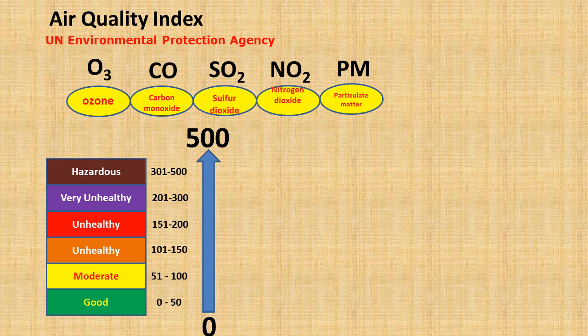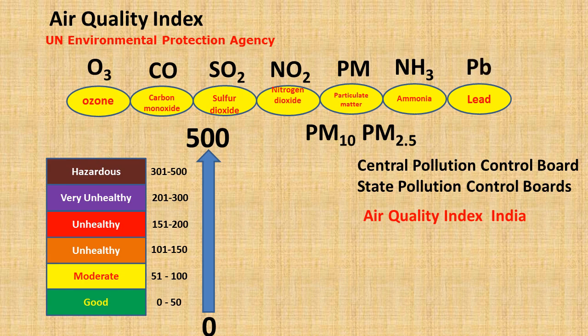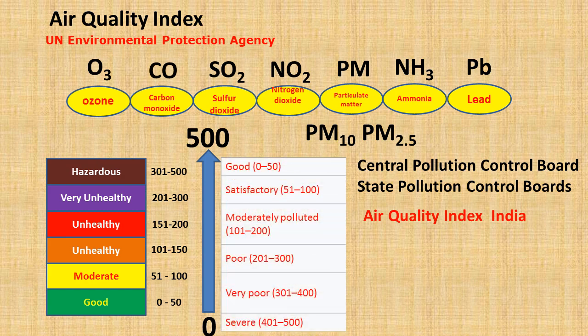Coming back to India, India's Air Quality Index includes the same five pollutants with two additional ones. Particulate matter is divided into PM10 and PM2.5, and ammonia and lead are the additional pollutants counted in India's AQI. India's scale is: till 50 is good, till 100 is satisfactory, till 200 is moderately polluted, till 300 is poor, till 400 is very poor, and till 500 is severe.